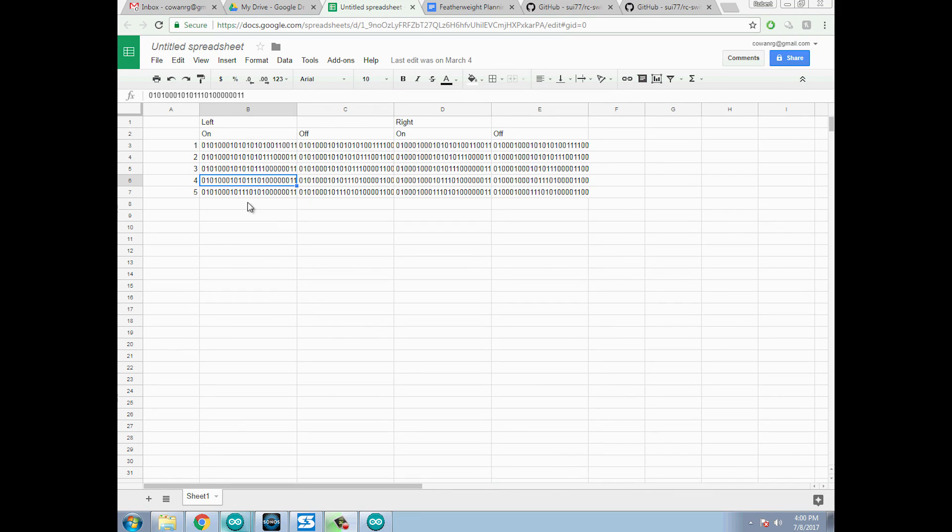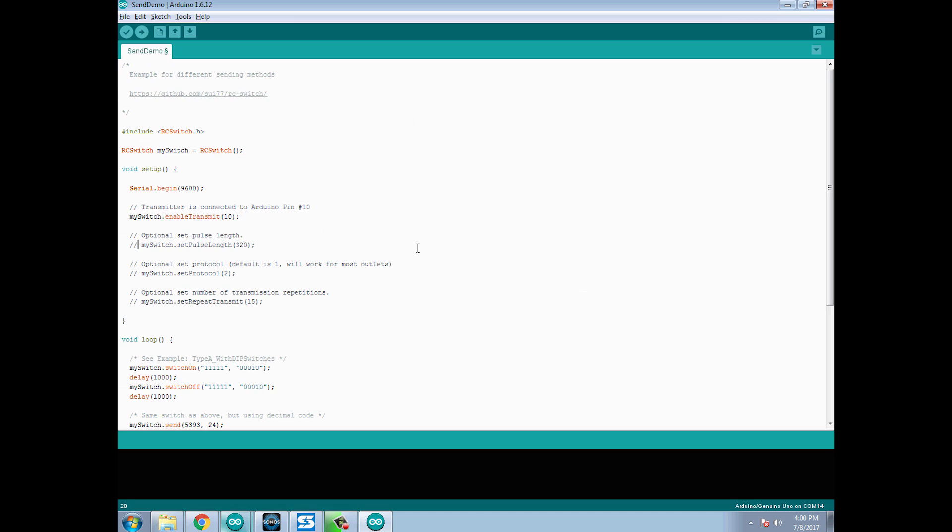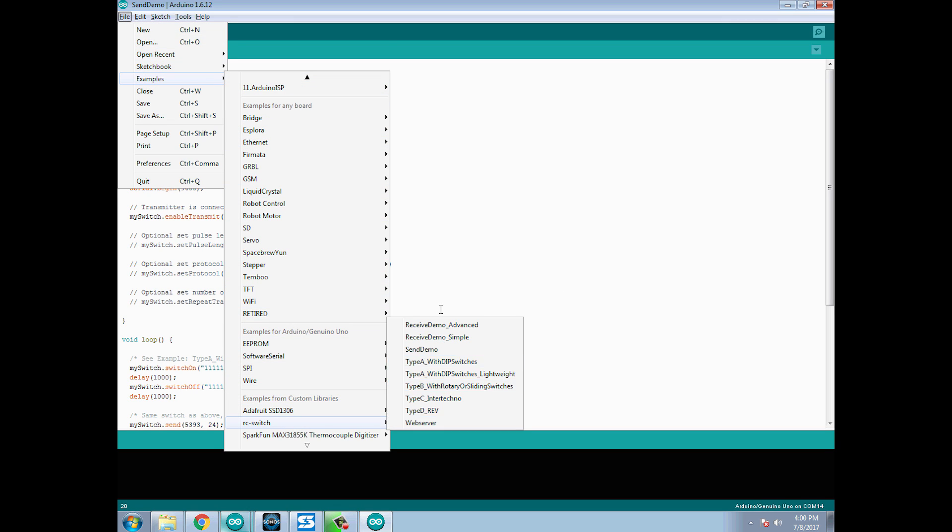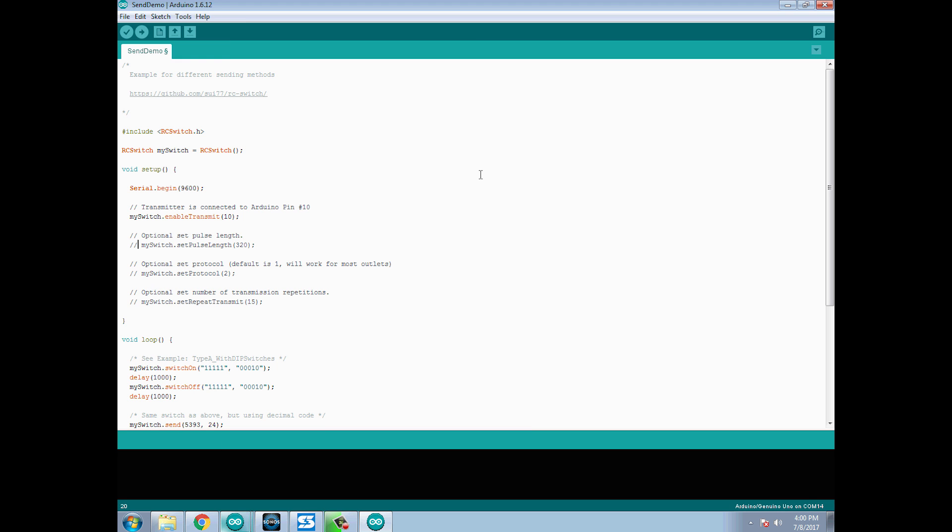So go ahead and write this down and take note of the binary command for both the on and off for everything on your remote controls. Okay now I have everything recorded in a spreadsheet here. I basically have two sides of the room, the left side and the right side. So I have all the on commands and all the off commands for both of these remote controls. We're going to go back into Arduino IDE and from the examples select the RC switch send demo. Remember before how I said pay attention to the pulse length. You can see that the default here is 320.